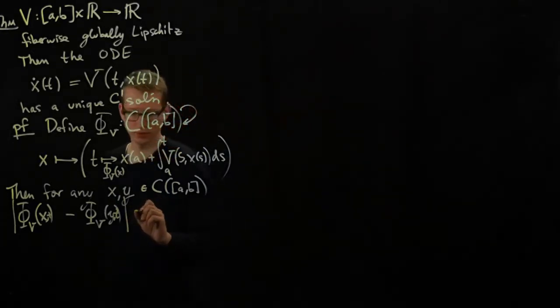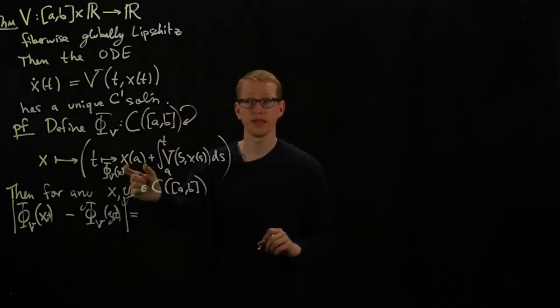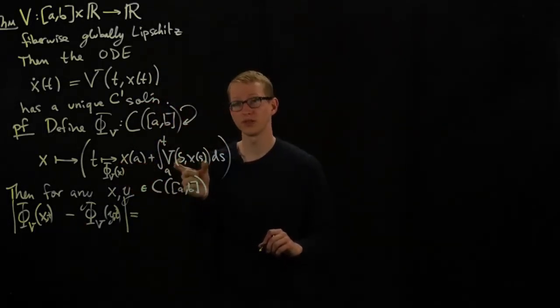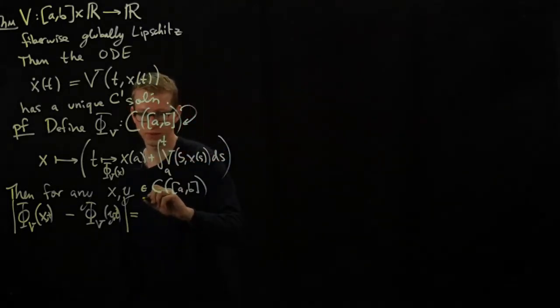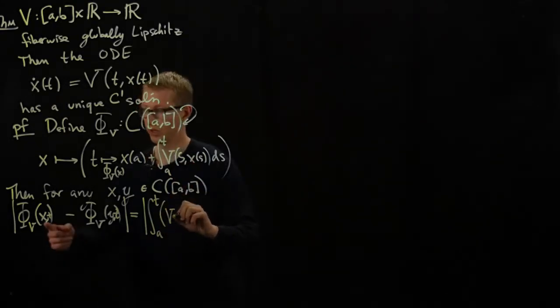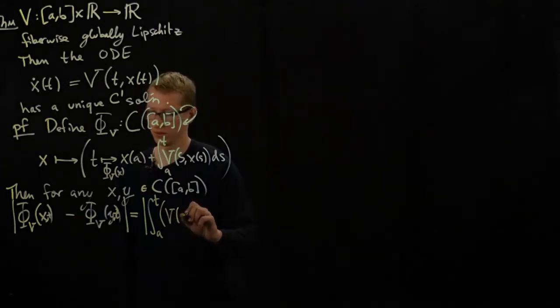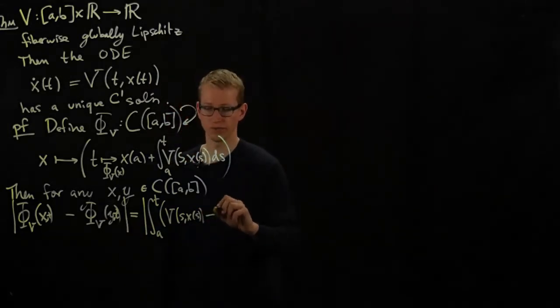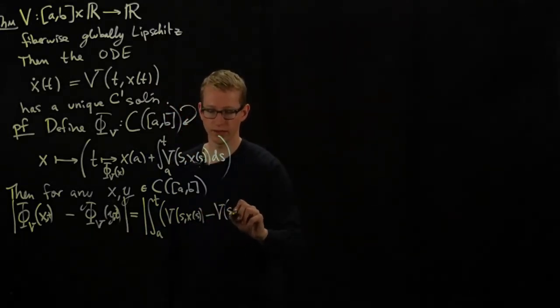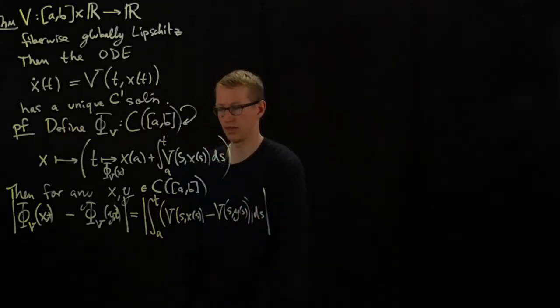So what we notice, what's the definition? Well, we plug in this definition and the x of a term cancels, and we're left with a difference of terms here. So this is actually the absolute value of the integral of a difference of two functions. The first one is for x, so this is going to be v of s x s, minus the second one for y, v of s y s, and then integrate that over ds, and then take the norm.